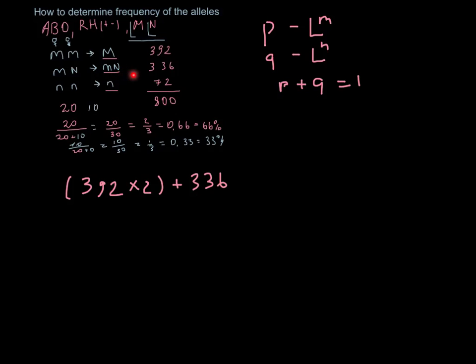336, which is MN type? Just because half of this would be M type and half N type. So we double the MM type because these are two alleles present and only half here.